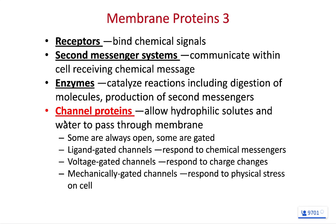Receptor proteins take an extracellular signal; that signal binds to the receptor protein and the protein usually changes shape. When the signaling molecule physically binds with the protein, new chemical bonds form, electrons are shifted, and the shifting of electrons causes the protein to change shape. A change in shape causes a change in function, and that protein will amplify the signal inside the cell via a secondary messenger chemical. A recent Nobel Prize went to a University of Minnesota Duluth alum for his study of these secondary messenger signals and their healthcare applications.